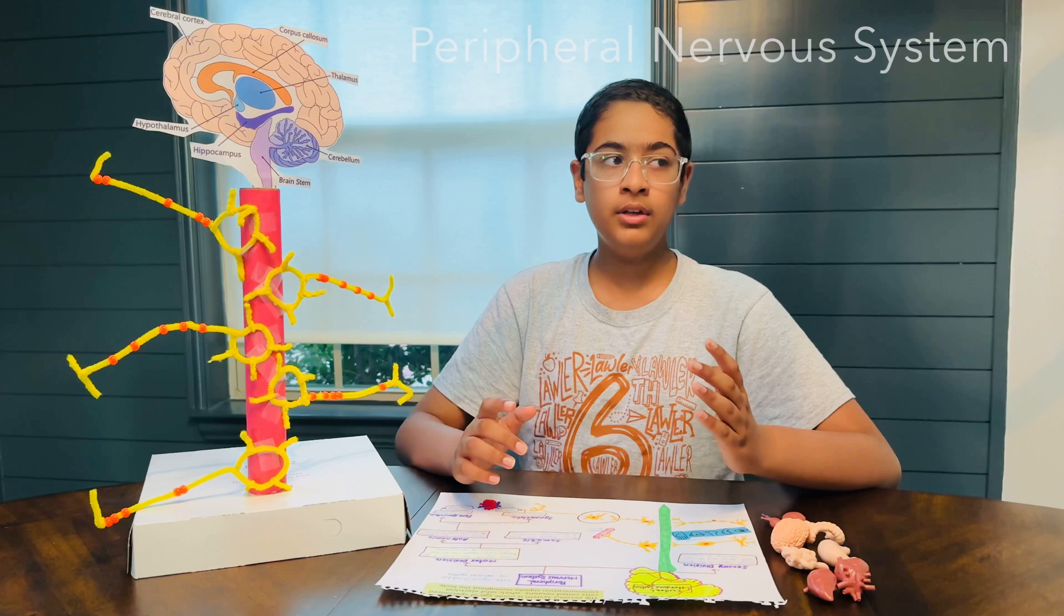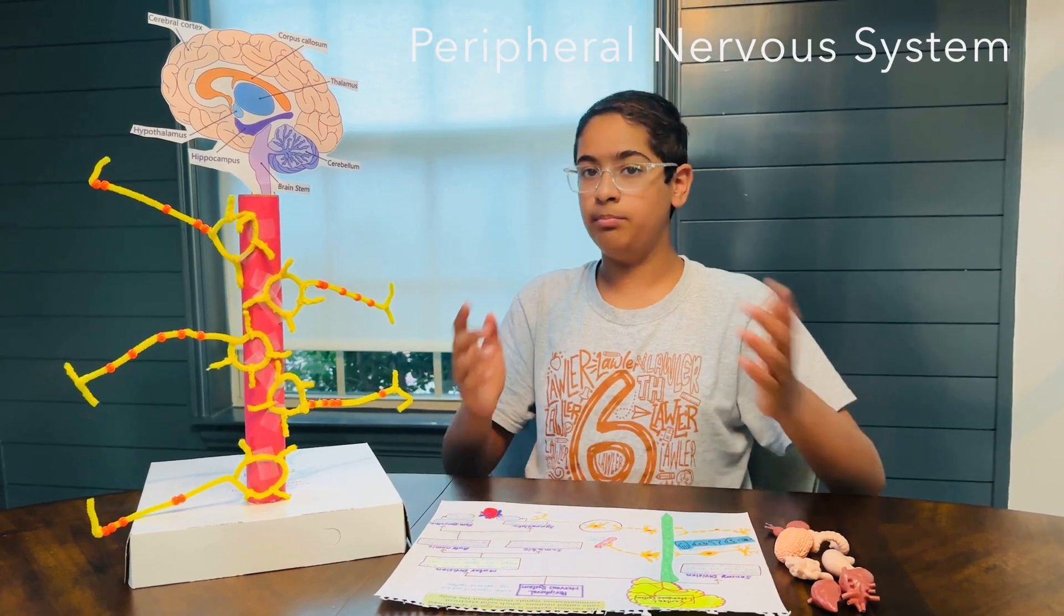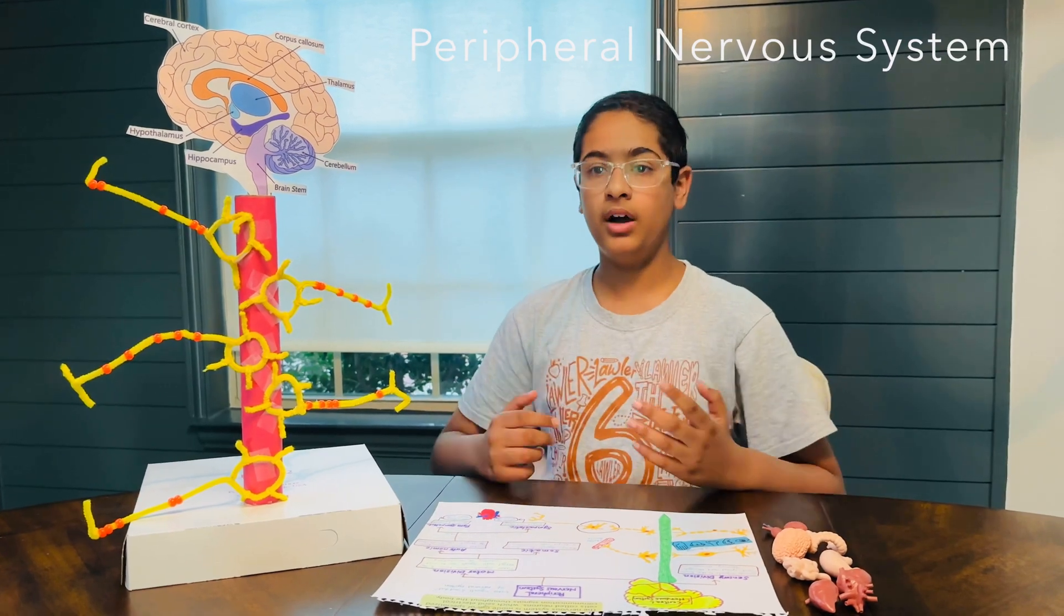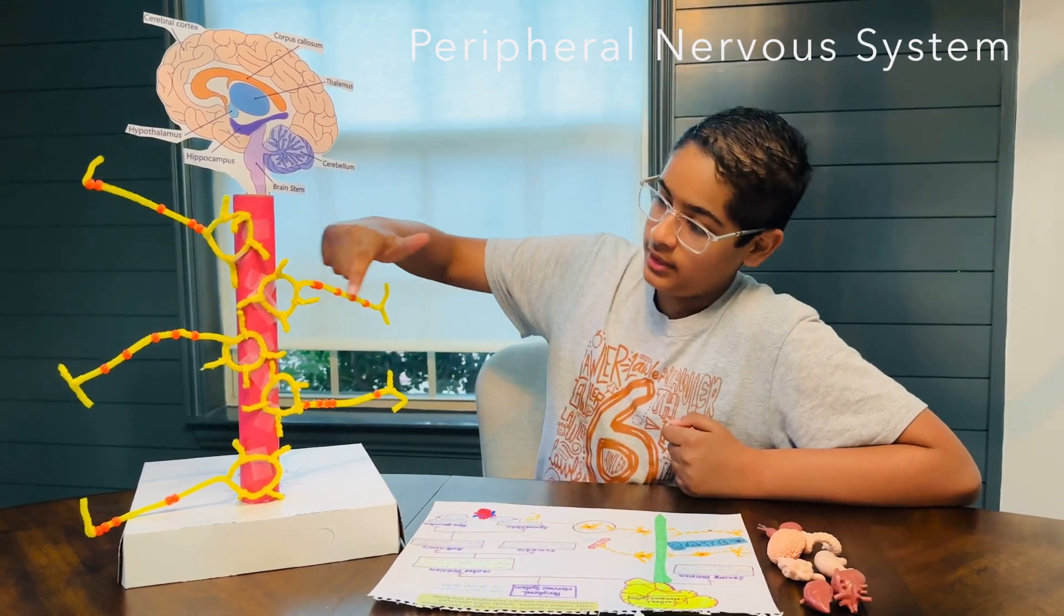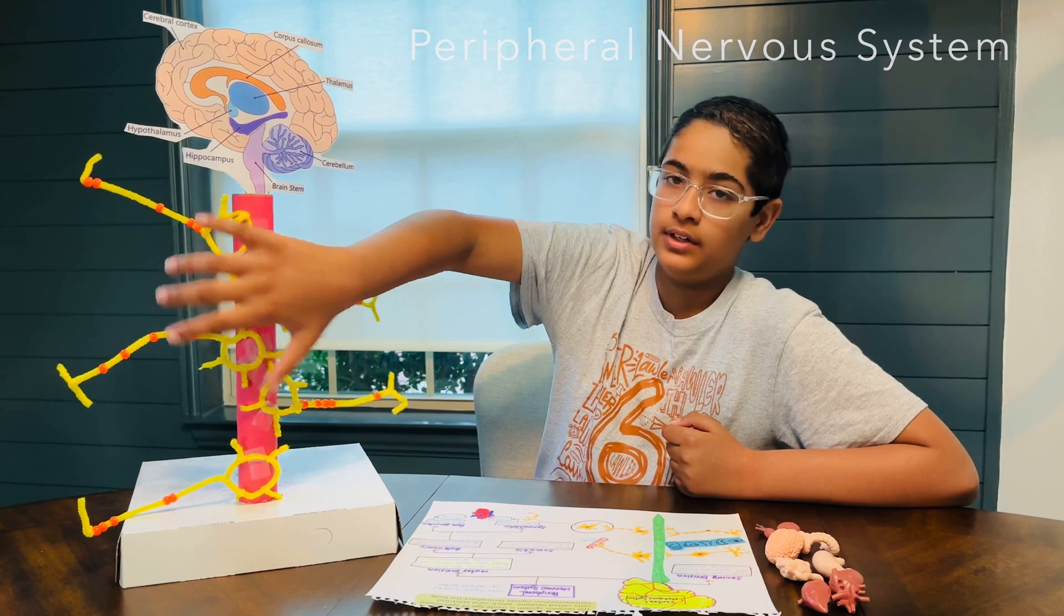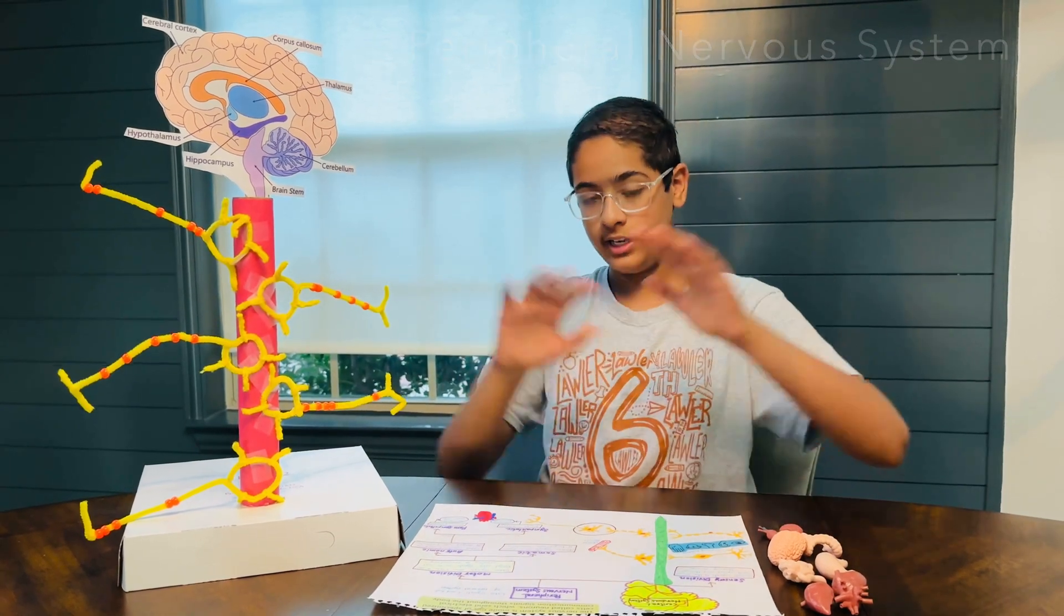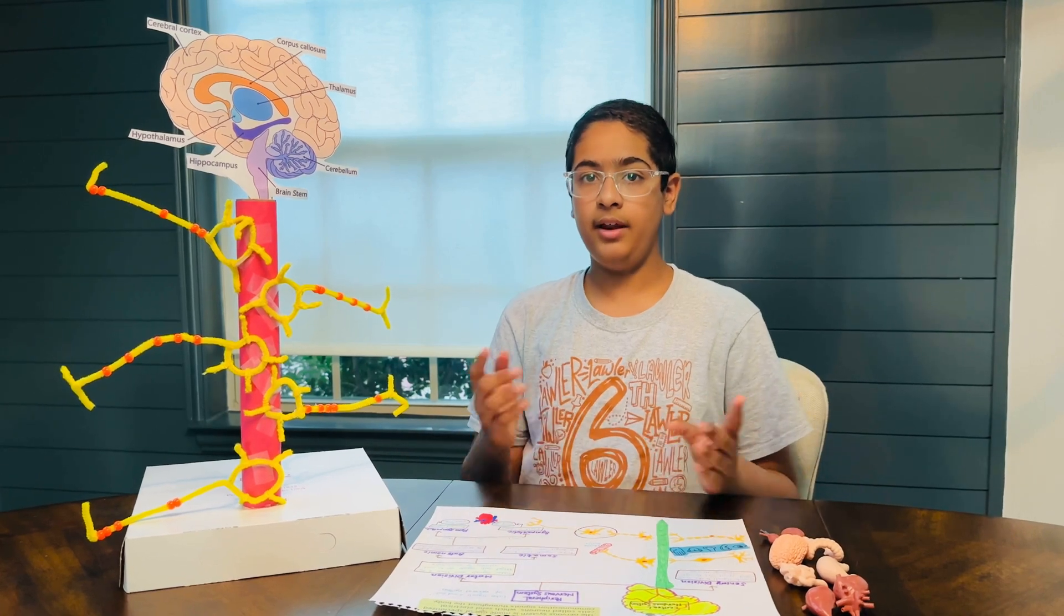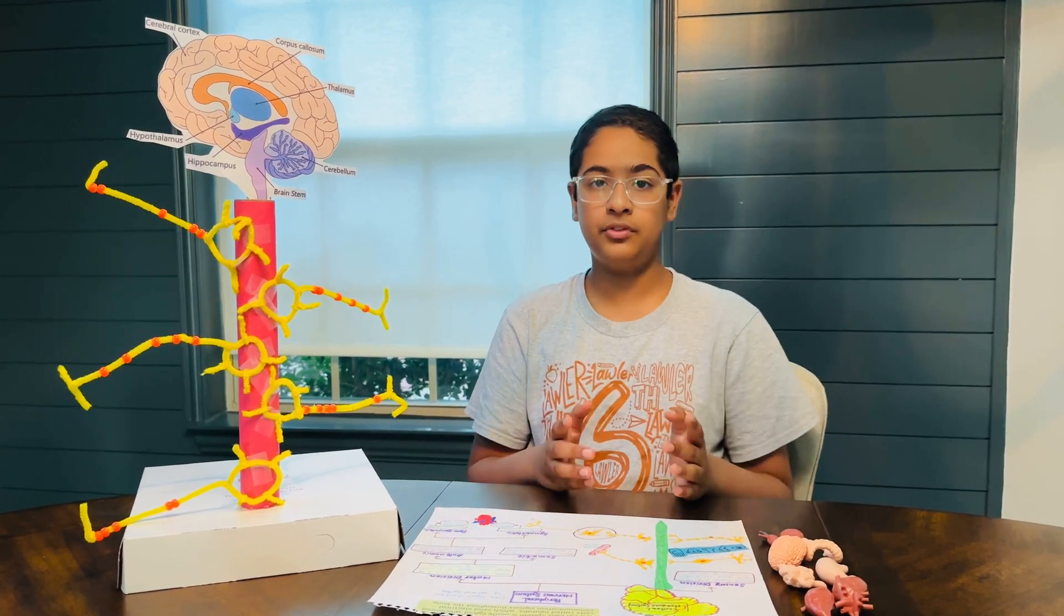The peripheral nervous system is every other nerve but the spine and the brain. Basically, they're located all over our body. We can see them here, like these parts, these nerves over here, these neurons. They're located everywhere.